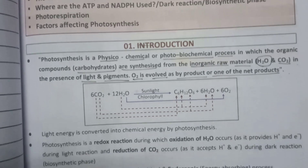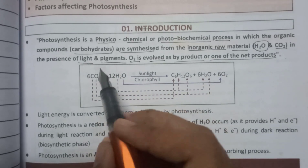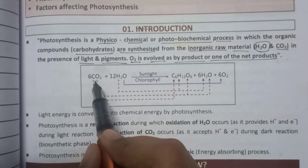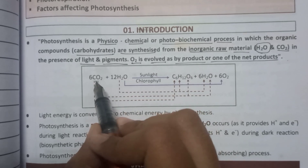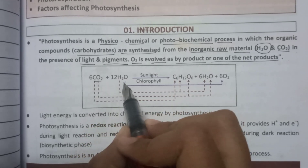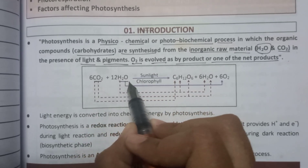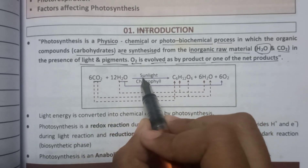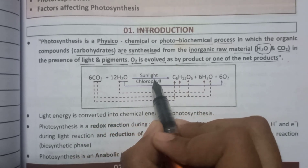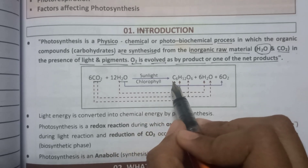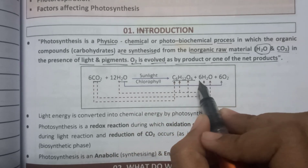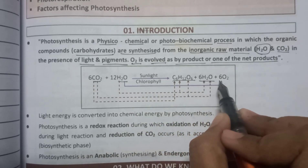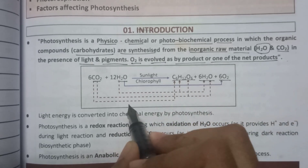So, how do we describe photosynthesis? Generally speaking, 6 molecules of carbon dioxide combine with water in the presence of sunlight and chlorophyll to form glucose, water, and oxygen.